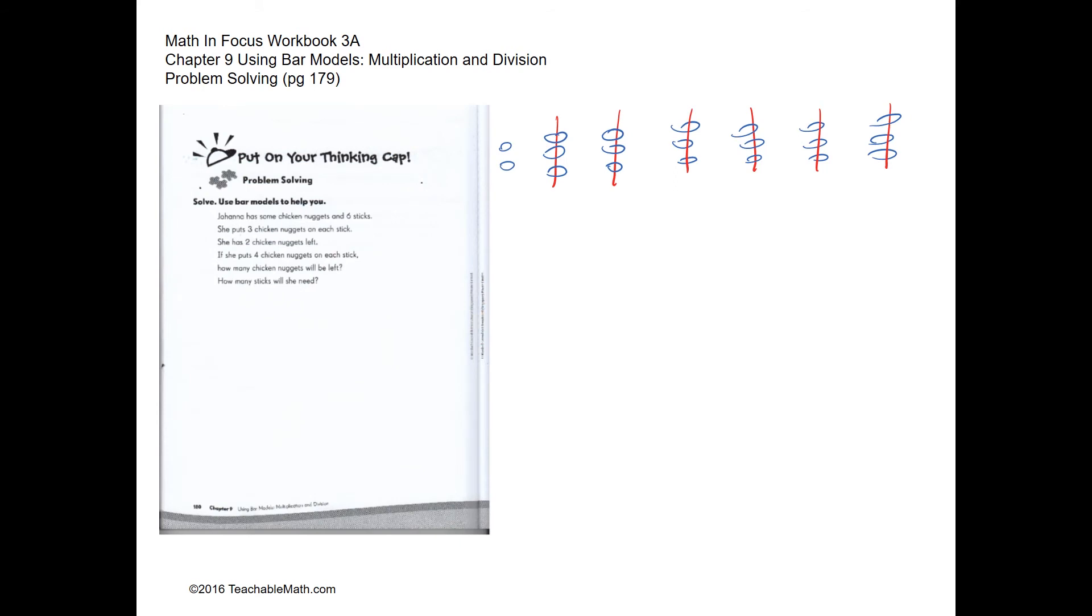Question two. Now Johanna has some chicken nuggets and six sticks, and she puts three chicken nuggets on each stick. She has two chicken nuggets left. So over here we have one, two, three, four, five, six. We have three chicken nuggets on each stick and we have two that is left over.